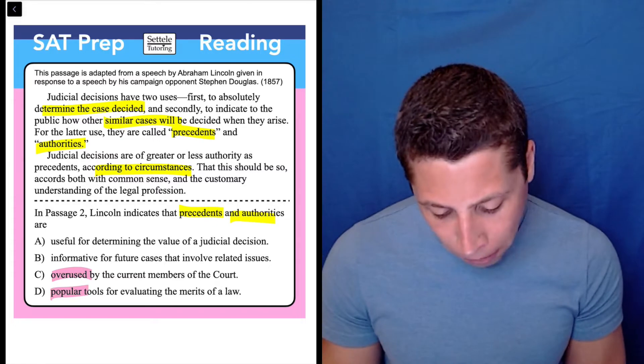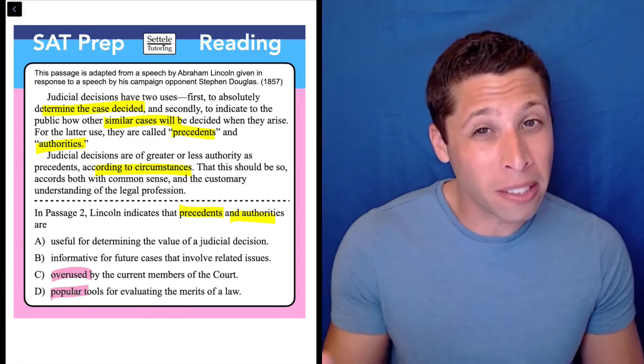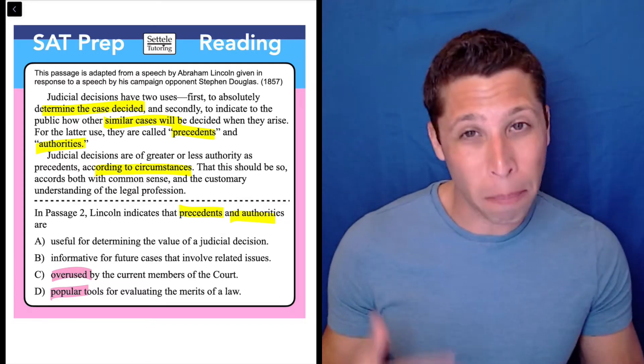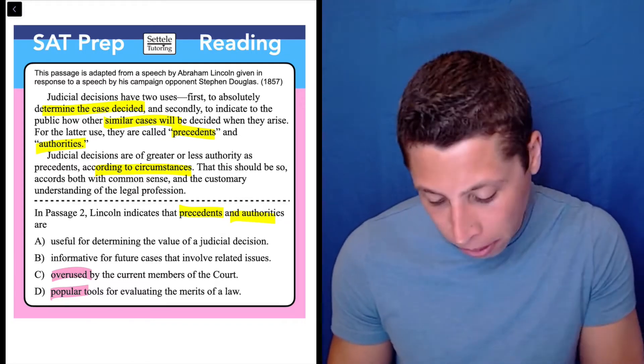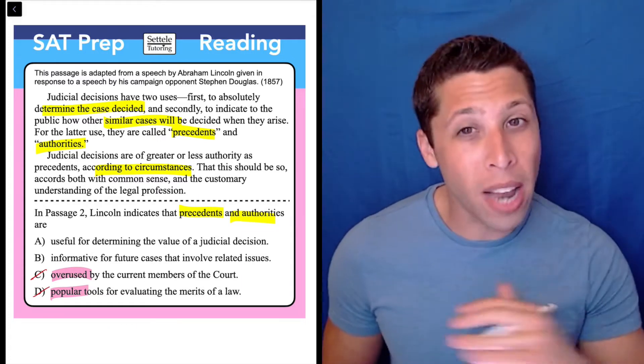And then choice D, popular tools for evaluating the merits of a law. It's not talking about what people think here. Maybe it's talking about what judges think, but popular? No, that's talking about all people.